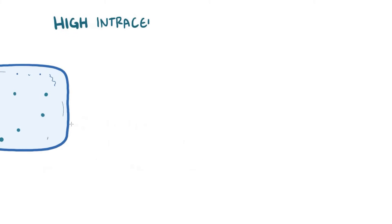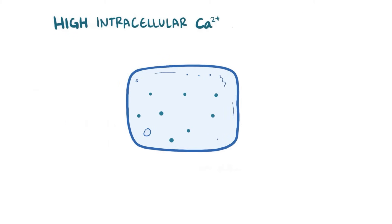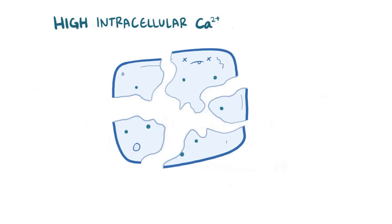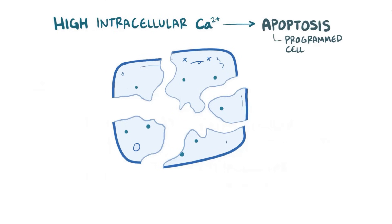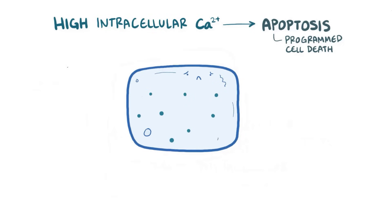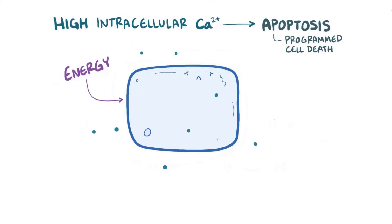High levels of intracellular calcium cause cells to die. In fact, that's exactly what happens during apoptosis, also known as programmed cell death. For that reason, cells end up using a ton of energy just to keep their intracellular calcium levels low.